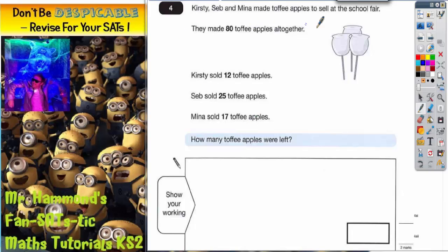Kirsty, Seb, and Mina made toffee apples to sell at the school fair. They made 80 toffee apples altogether. Remember, altogether is a posh word for total, so the total must be 80.